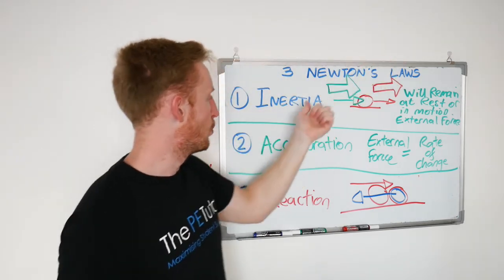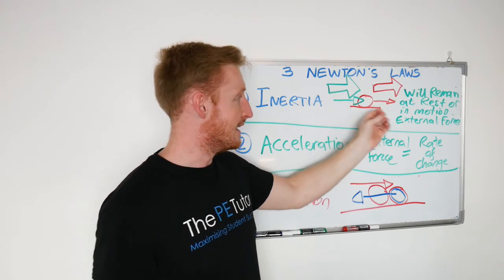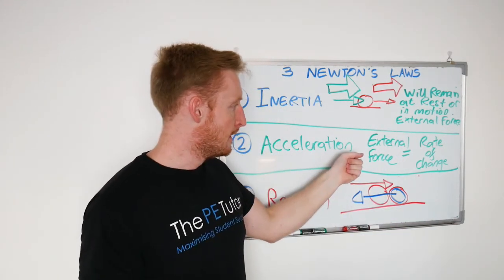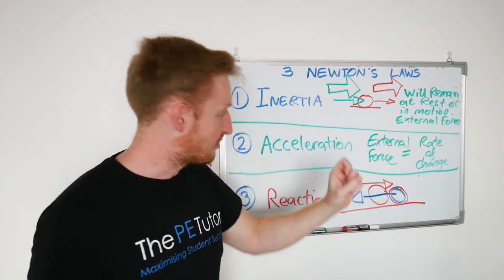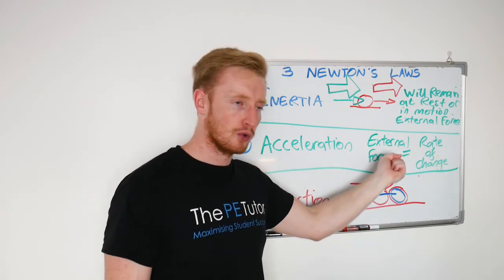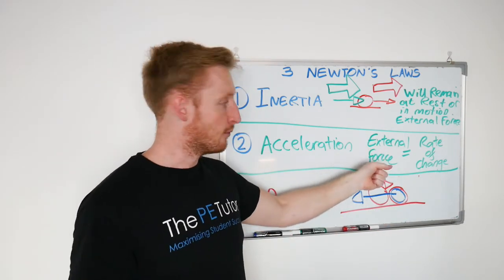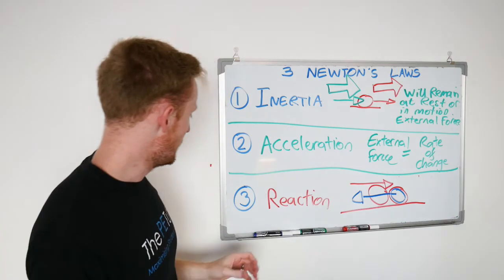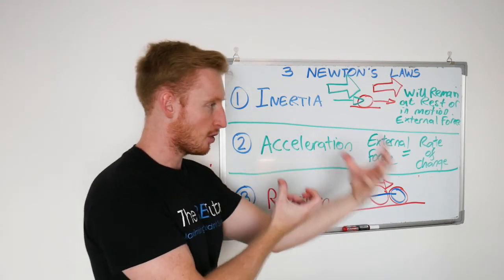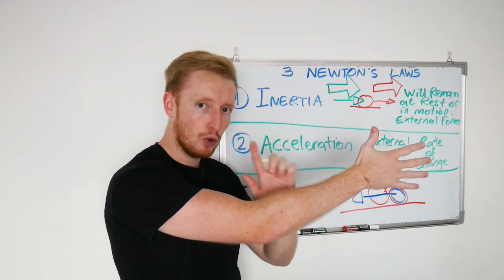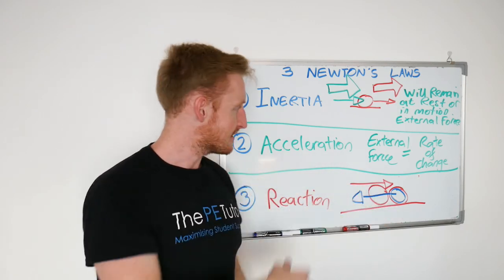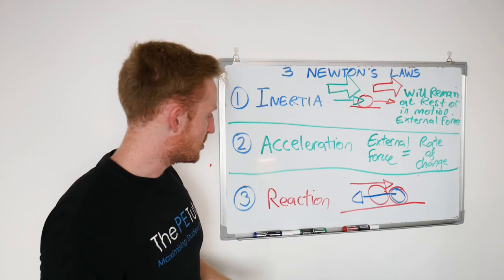So to quickly recap, Newton's three laws. First law is law of inertia. A body or an object will remain at rest or in constant motion unless an external force acts upon it. Law number two, law of acceleration. The rate of change experienced by an object is directly proportionate to the magnitude of the external force that acts upon it. A small external force, small rate of change, small rate of acceleration. Large external force, large rate of change, large acceleration. And lastly, law number three, law of reaction. When two surfaces meet and there's contact, object one hits object two applying an action force in a certain direction. There will be an equal but opposite reaction force coming back off object two and going into object one that's just collided. And that is that. Newton's three laws. Law of inertia, law of acceleration, and law of reaction.